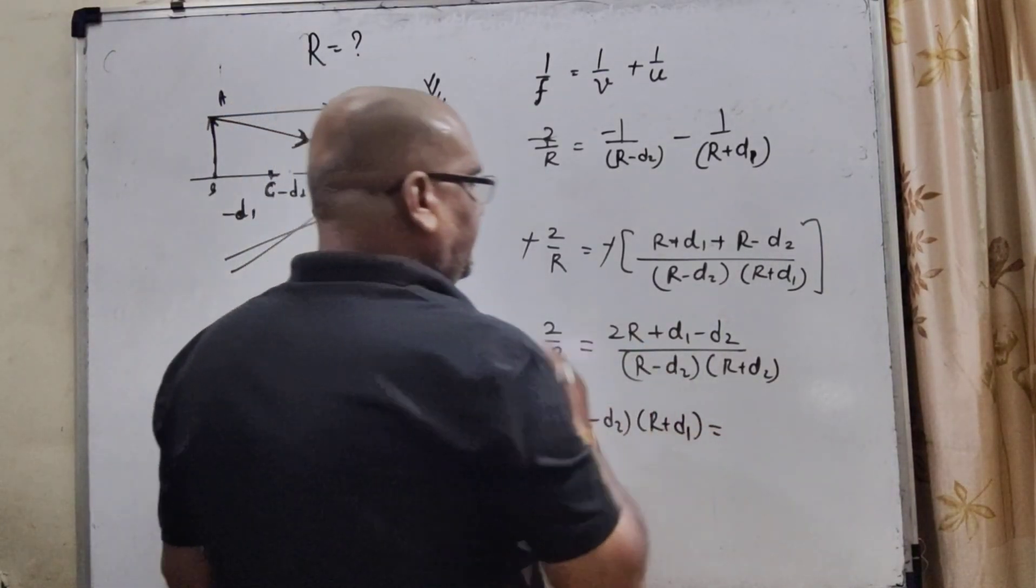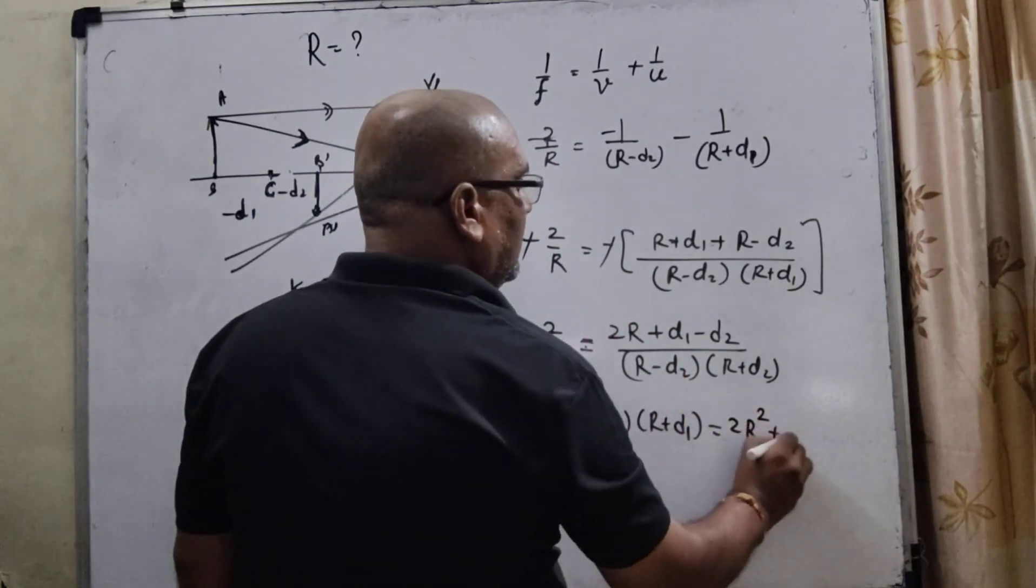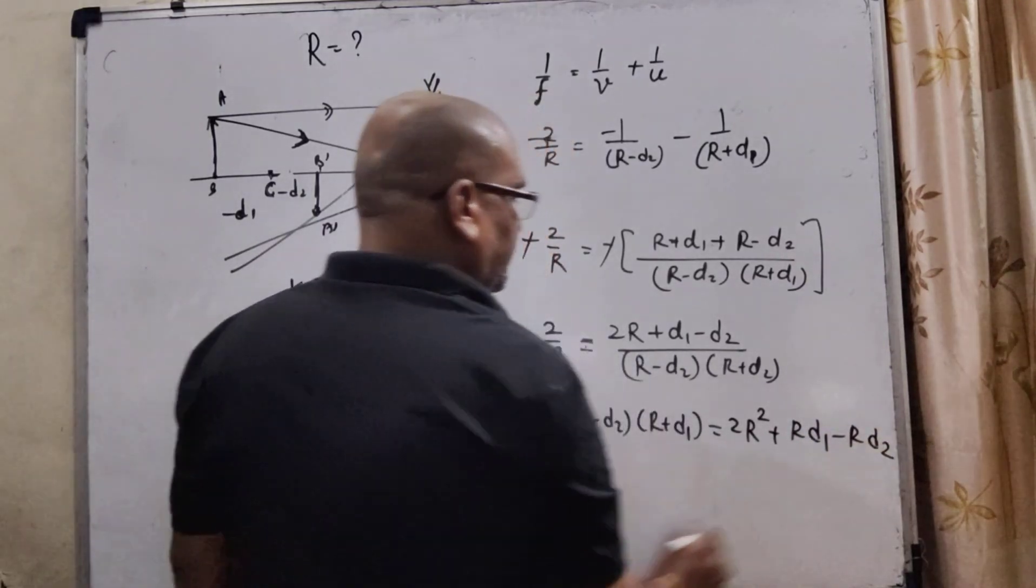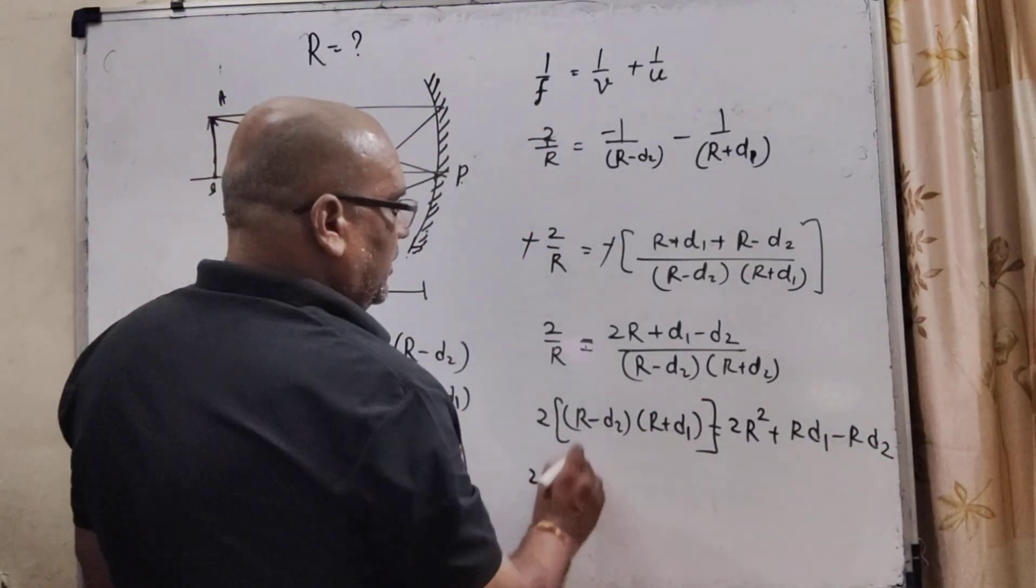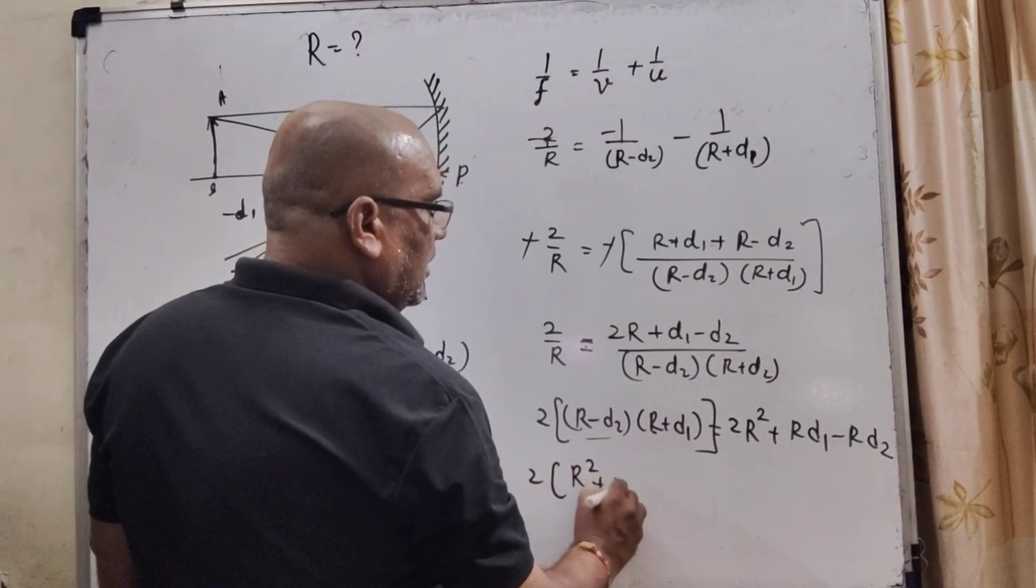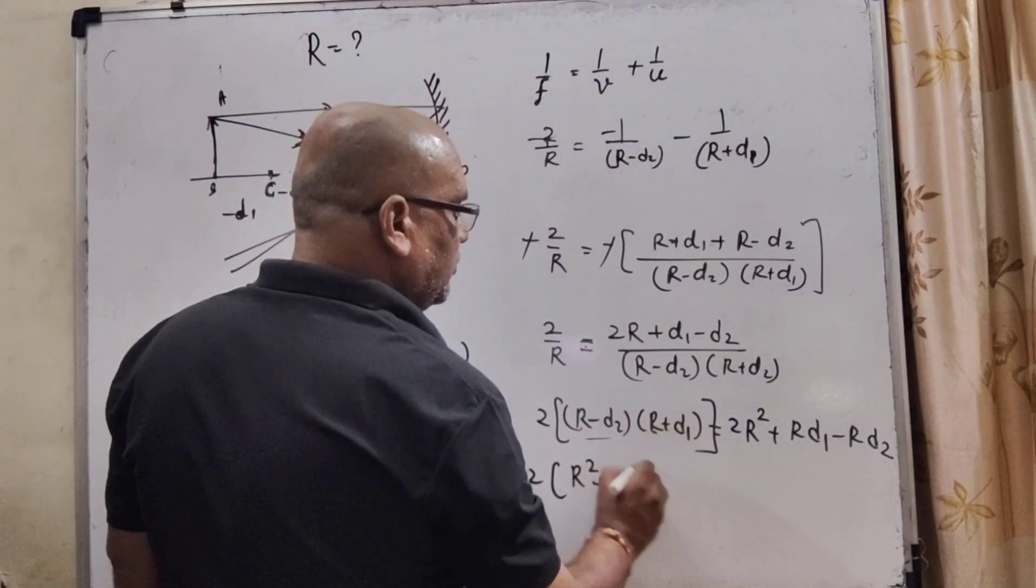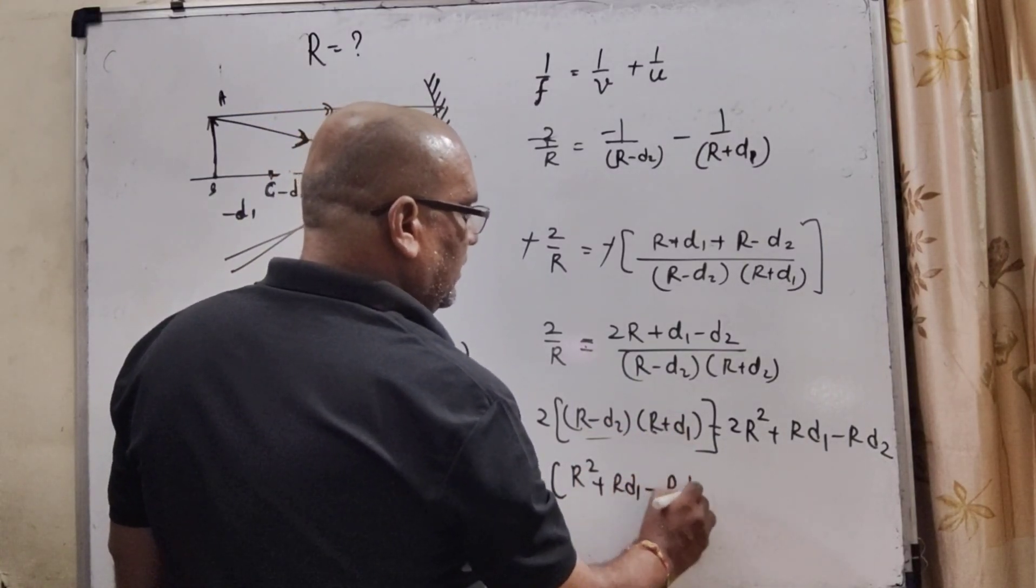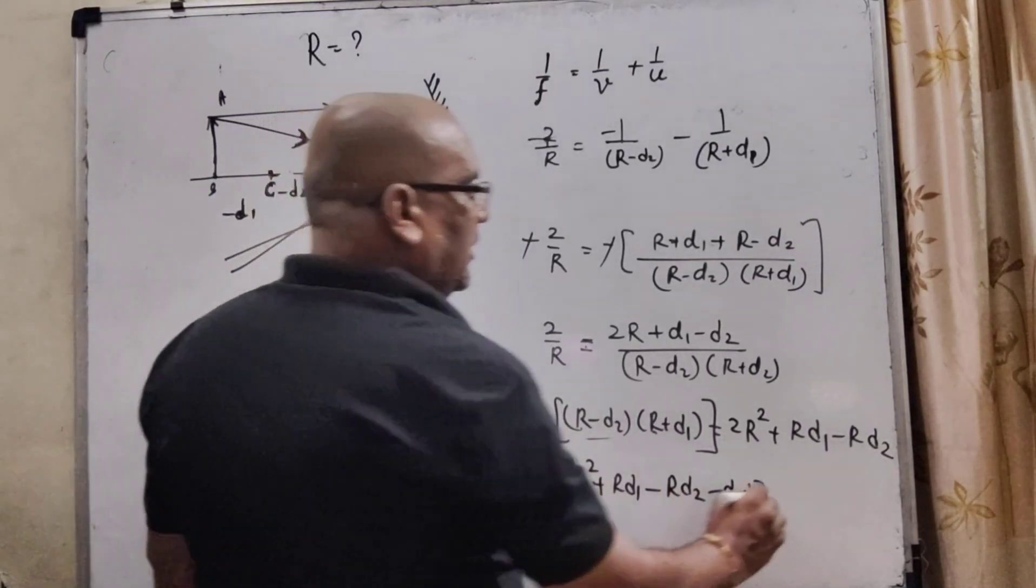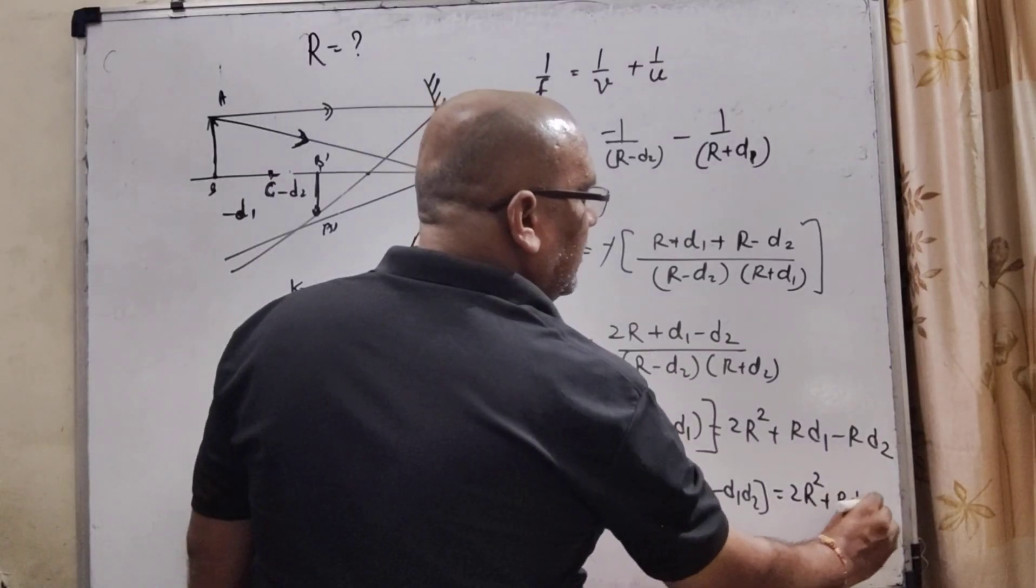Here, now, open the bracket by multiplying. R square. R minus d2. Now, d2. Now, d2 multiply with this bracket. So, minus Rd2 and minus d1d2 is equal to 2R square. Rd2 minus Rd2 minus Rd2.